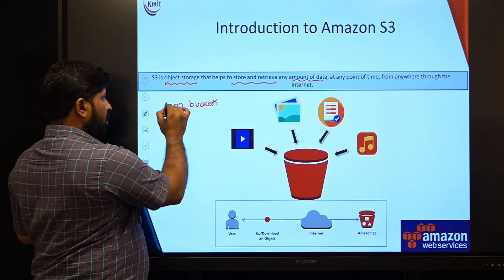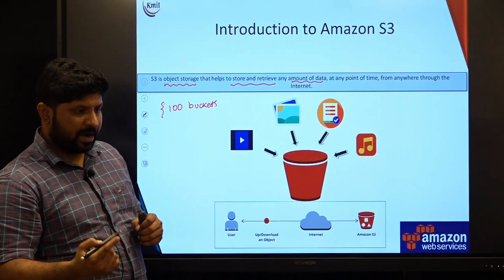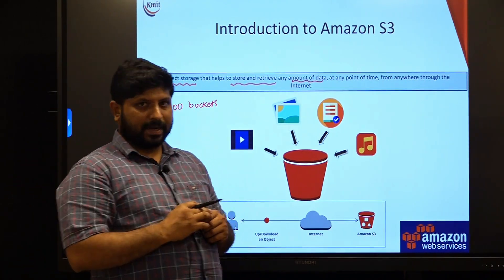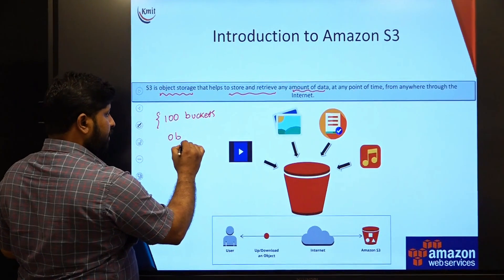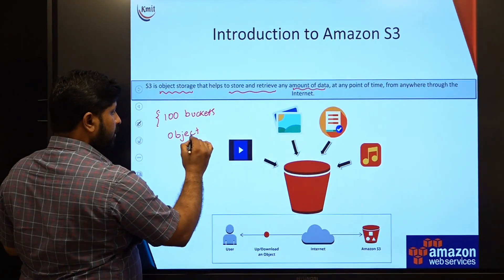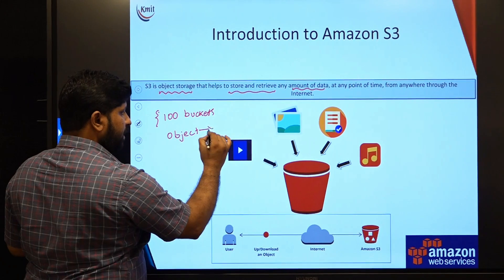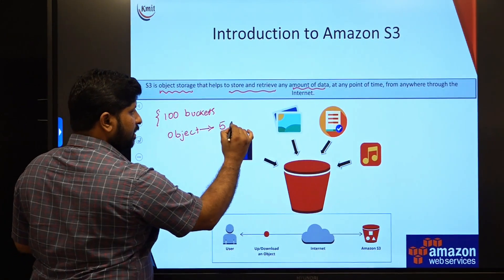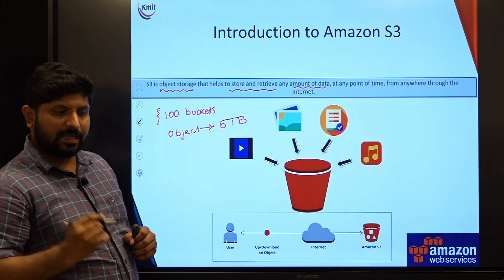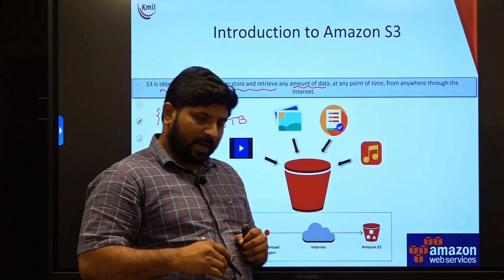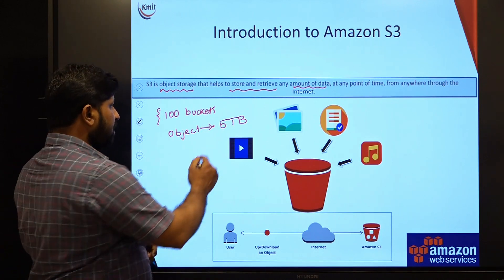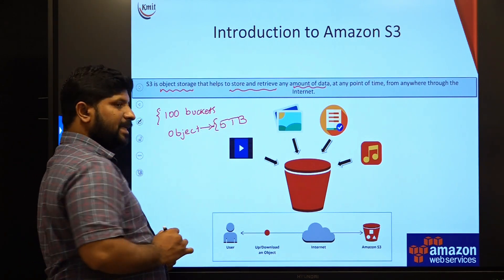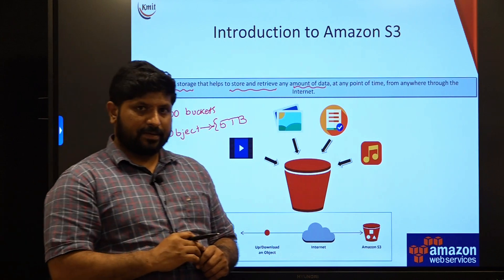By default, from an account, we can create 100 buckets. Within the buckets, we will be storing the objects. This object should not exceed the size of 5 terabytes, a single object. You can store any number of objects, but when you are focusing on a single object, the single object cannot exceed the size of 5 terabytes.